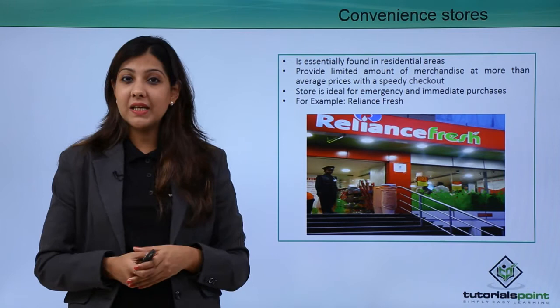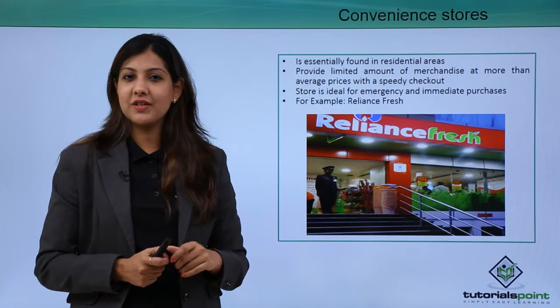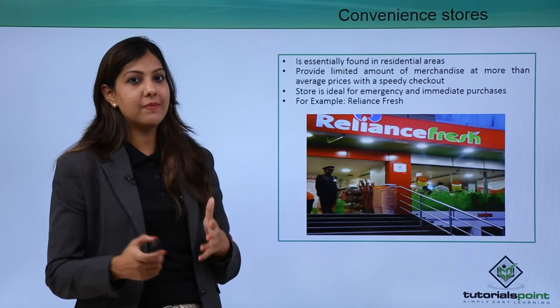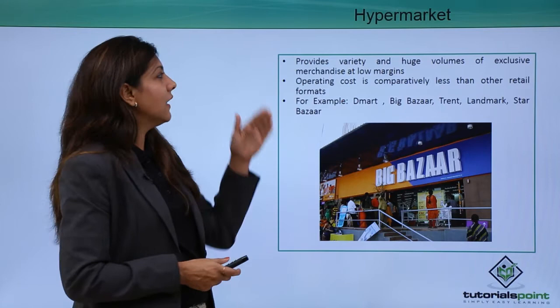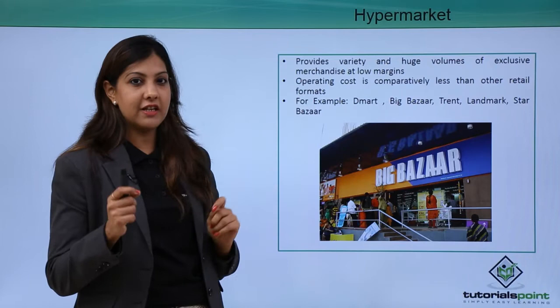Convenience stores are found in residential areas and provide a limited amount of merchandise at above-average prices with a speedy checkout system. They are ideal for emergency and immediate purchases — for urgent needs you run to a nearby convenience store. Examples include Reliance Fresh and Nature's Basket.